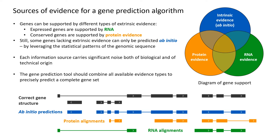It is important to note that each of these information sources contains a lot of noise, both of biological and technical nature. In summary, to precisely predict a complete gene set, a gene prediction tool needs to consider a combination of all of these types of evidence.